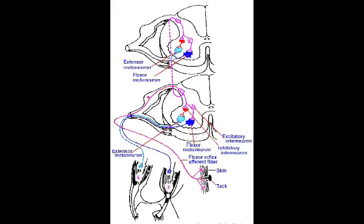The afferent fibre synapses with an interneuron — a primary interneuron — based on the fact that it leads to the contraction of our muscle. This interneuron travels between the dorsal and the ventral horns and then synapses again with one of our flexor motor neurons, an alpha motor neuron that travels to our flexor muscle and causes contraction of that muscle, causing the limb — whether the foot or the arm — to withdraw from the harmful stimulus.